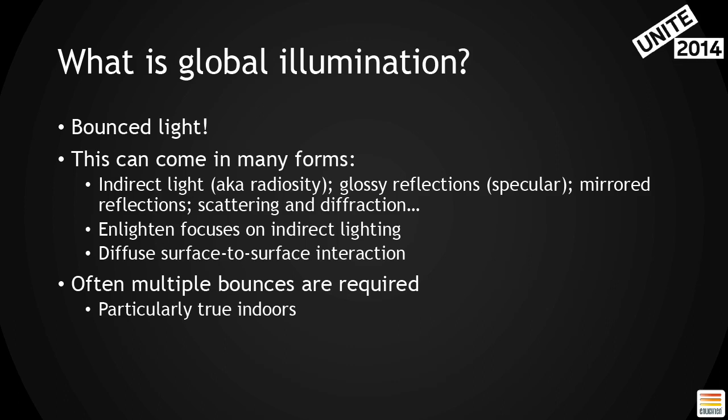There are a number of aspects of global illumination. One is indirect light — the general distribution of light. Other aspects are glossy reflections, specular reflections, or scattering and diffraction with, for example, glass. Enlighten is focusing on the indirect light portion — just the general distribution of light in the scene. Glossy reflections, mirrored reflections, diffraction and so on can be done with other techniques. With light distribution in environments, it's a sensitive area where you really have to do it basically physically correct, because if something is not physically correct, it's very noticeable.